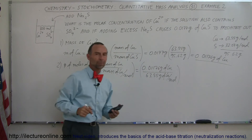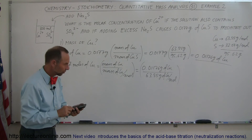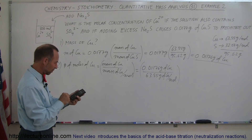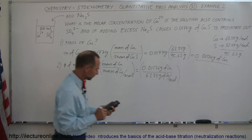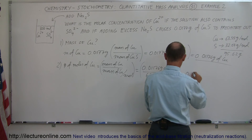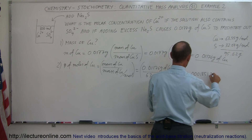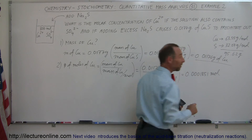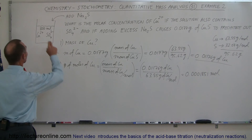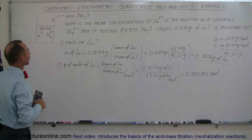Notice that the grams of copper cancel out, and since we have 1 over moles in the denominator, we get the number of moles. Dividing by 63.55 equals 0.0001851 moles. So now we have the number of moles of copper, which is of course the number of moles of copper ions in the solution, assuming we precipitated all of the copper out of the solution.